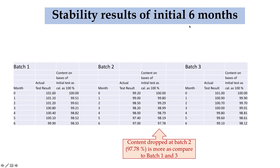Here are the results for the six-month stability studies for batch number one, batch number two, and batch number three. This is the content of the product in terms of percentage. These are the actual test results, with initial content calculated as 100 percent. The results are shown for initial and one, two, three, four, five, and six months.